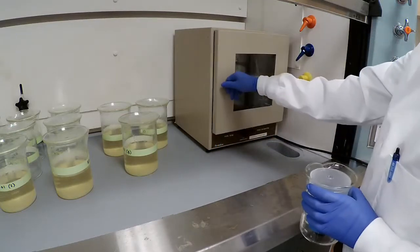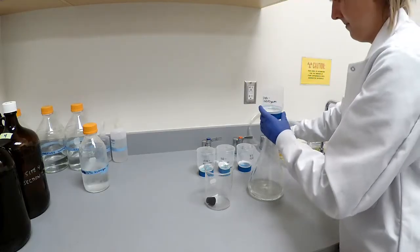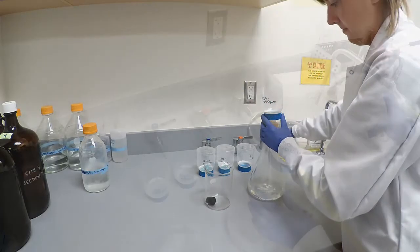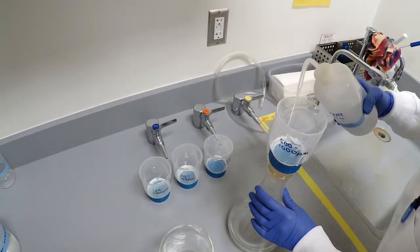The next day, vacuum filter off the hydrogen peroxide. Rinse the sides of the filtering unit with 20% 2-propanol.